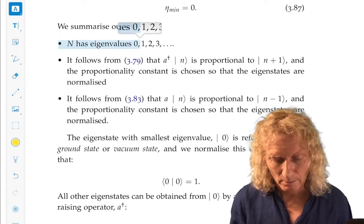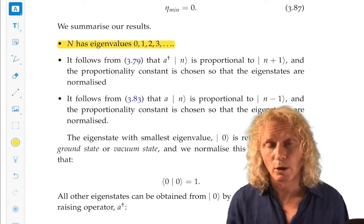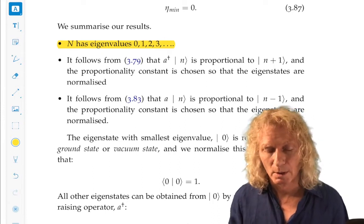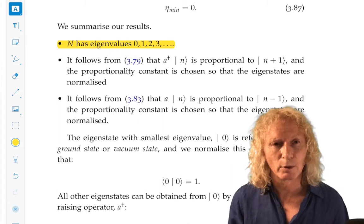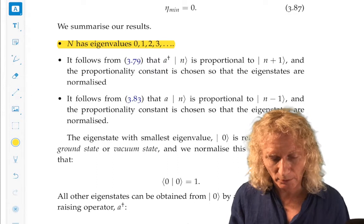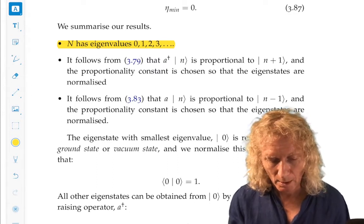So let's summarize what we have. The number operator has eigenvalue zero, because it's positive, and we just argued that it has the smallest eigenvalue zero, and then it increases by one. Zero, one, two, three, and so on.